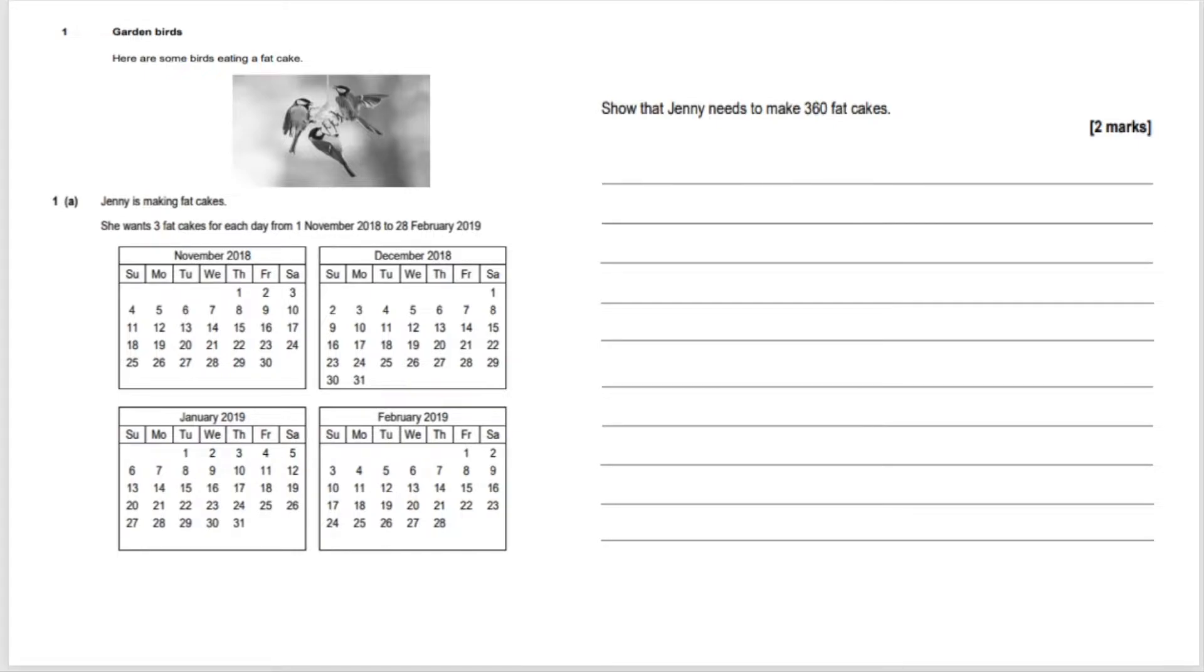She wants three fat cakes for each day from November 1st, 2018 to the 28th of February, 2019. So that's four months. Now, as I said, this is a two mark question.